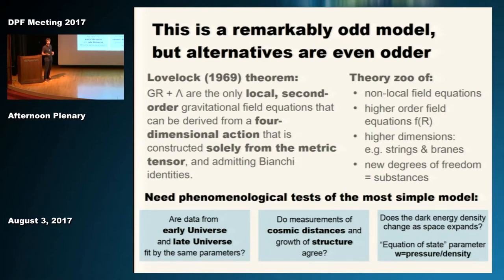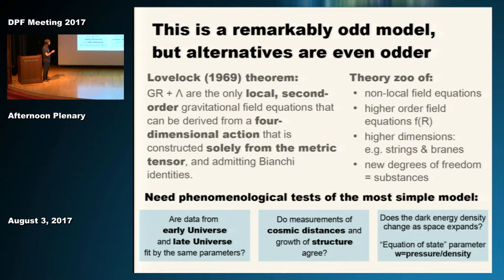There are three types of questions that are good starting points for finding out about dark energy. First: do data from the early universe and the late universe fit by the same parameters, or is there something else going on in the billion years between that Lambda CDM doesn't describe? Second: do measurements of cosmic distances and measurements of the growth of structure agree with each other? Third: does the dark energy density change as space expands—is it really a cosmological constant, or is it changing over time?